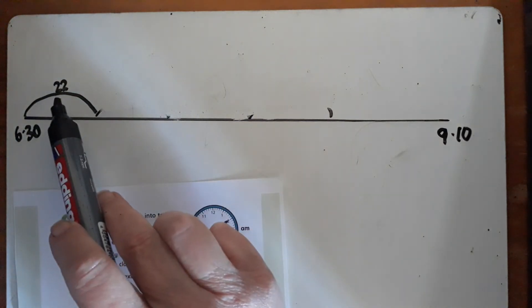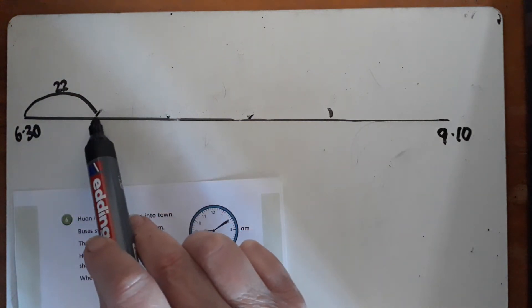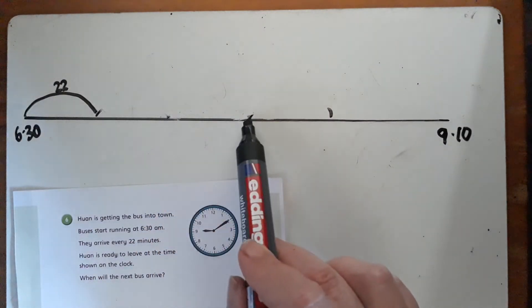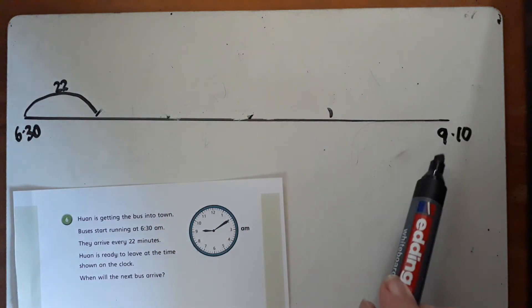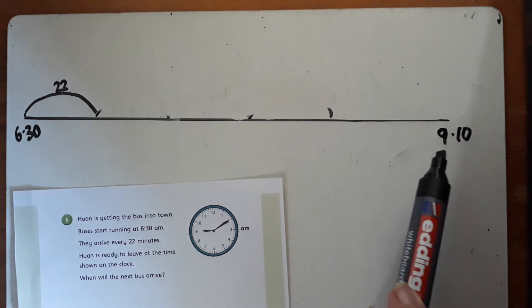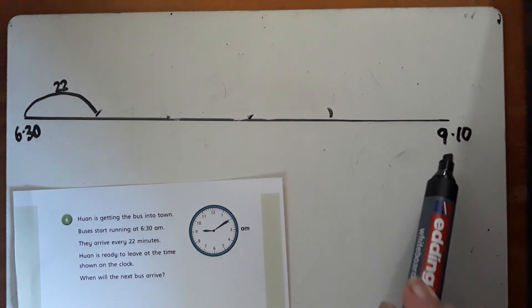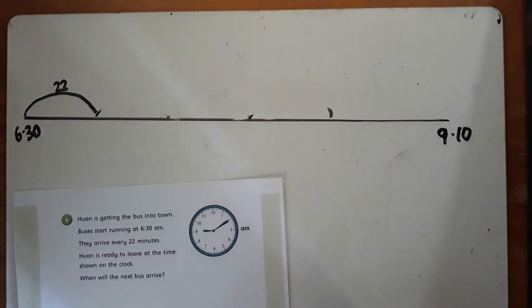We could go on the number line and keep doing steps of 22 minutes until we eventually got to when Huan is ready to catch the bus at 9:10 AM. But that's going to take a lot of time, a lot of steps, and we're probably going to make a mistake. I'm going to show you how to make it easier to calculate.